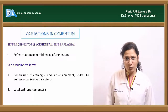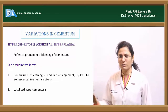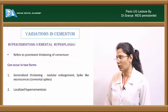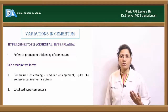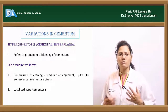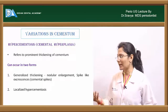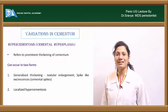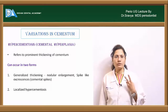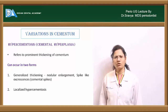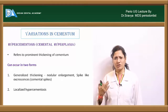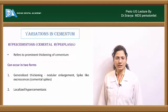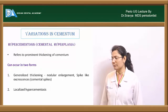Variations in cementum include pathological and developmental conditions. Hypercementosis, also called cemental hyperplasia, refers to excessive production and prominent thickening of cementum. It occurs in a localized or generalized form; generalized thickening can appear as spikes or nodular formations, also called cemental spikes.